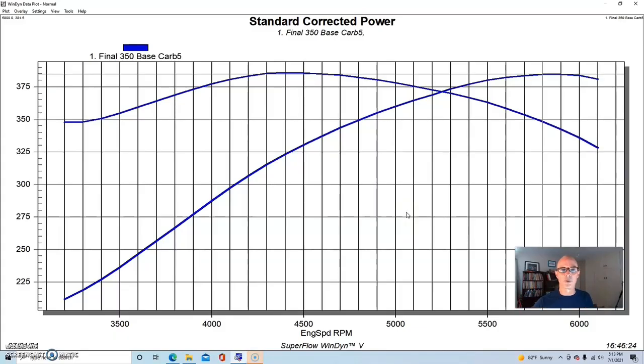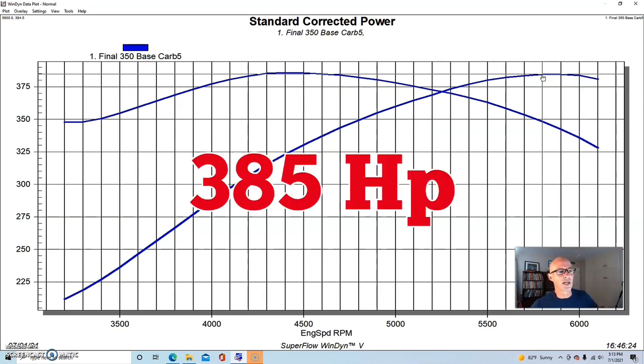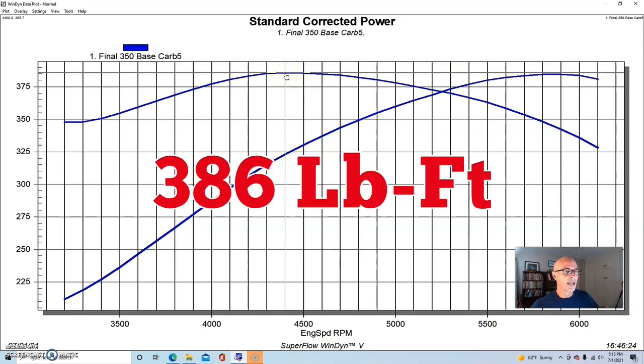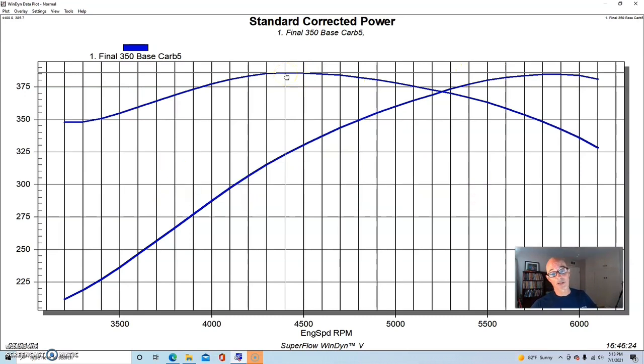We ran this thing with optimized timing and we even did jetting to optimize the air fuel, although it didn't really take very much. Just taking the carburetor and setting it on there actually worked fairly well. I think we only needed to change the jetting by two or three jets, so it worked out fairly well. This thing made 385 horsepower and 386 foot pounds of torque.